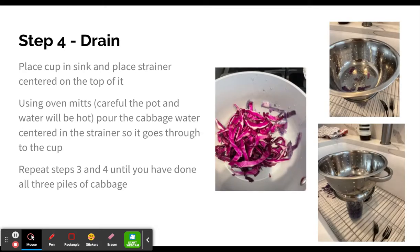Step four is to drain. You're going to place your cup into the sink like this, and then place the strainer centered on top of the cup. Using oven mitts, and be careful, the pot and water will be very hot. Pour the cabbage water mixture into the center of the strainer, so we're probably about where my mouse is. And that will just make sure that it goes through into the cup without wasting as much as possible.